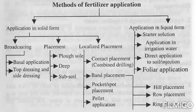Lastly is the starter solution, where two solutions are mixed at an appropriate amount and then sprayed. These nutrients reach the plant immediately. This method is mostly applied for pulses and vegetables. So these are the different methods of fertilizer application to crops.